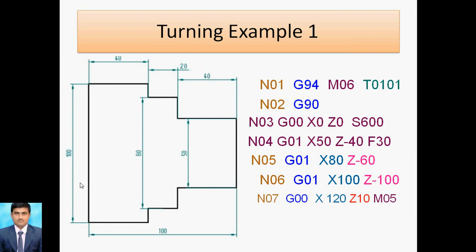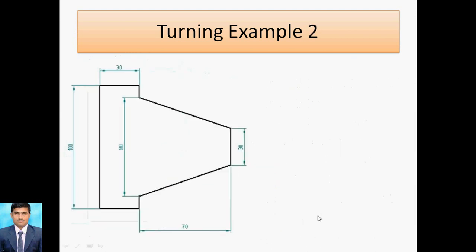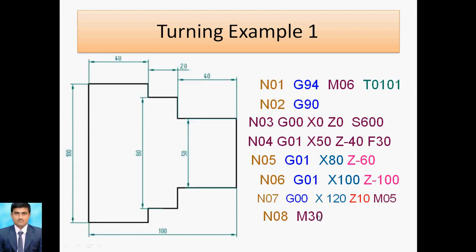M05 means spindle stop, so after this the spindle will stop. The next operation is M30 — program end. This is regarding the first turning cycle.